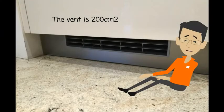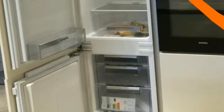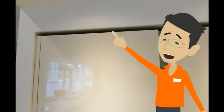This begins with a 200 centimeter cubed grill at the base of the unit to allow that air flow. We can then exhaust air from the top in one of three different ways which we will explain later.